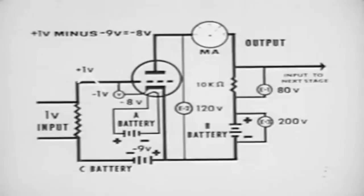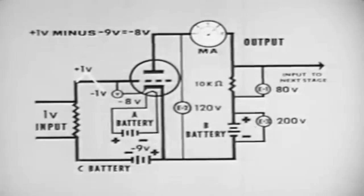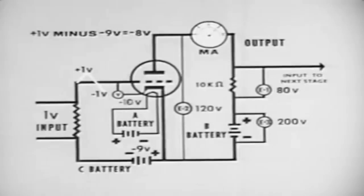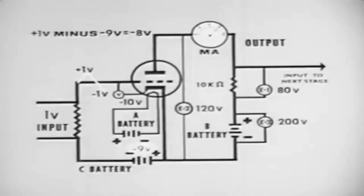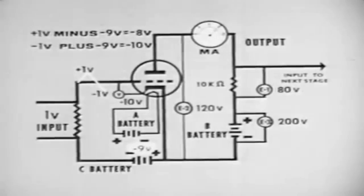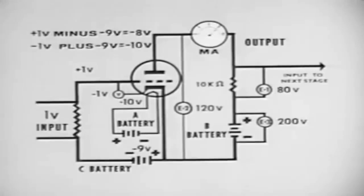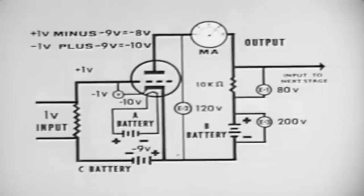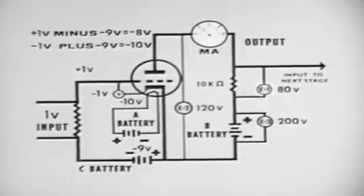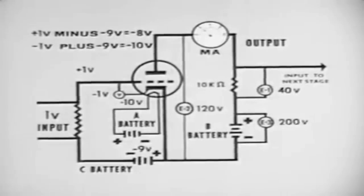When the signal voltage goes to a negative peak of minus 1 volt, the difference in potential between the grid and cathode becomes minus 10 volts, computed by adding minus 1 and minus 9. This increase in potential causes the current through the tube to decrease to 4 milliamperes. The voltage increases to 160 volts.